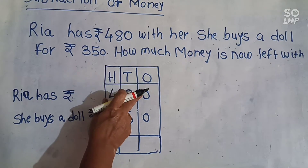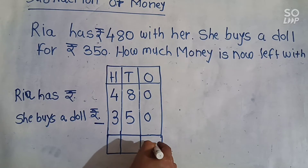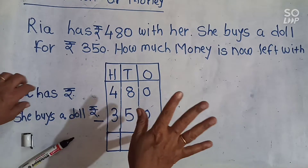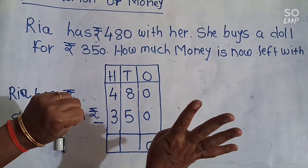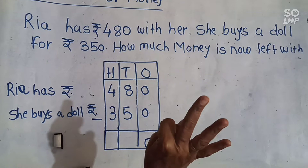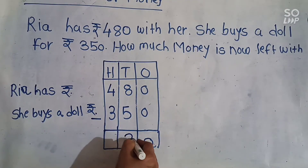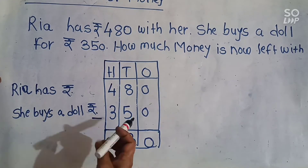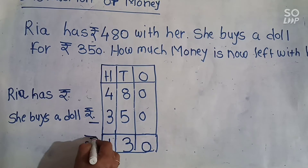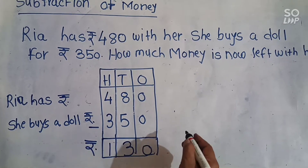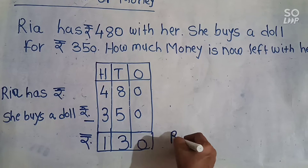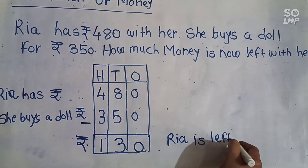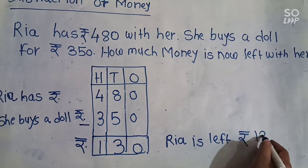Ones place: 0 minus 0 is equal to 0. Tens place: 8 minus 5 — we cut out 5, remaining 3. And hundreds place: 4 minus 3, remaining 1. So Rhea is left with rupees 130.